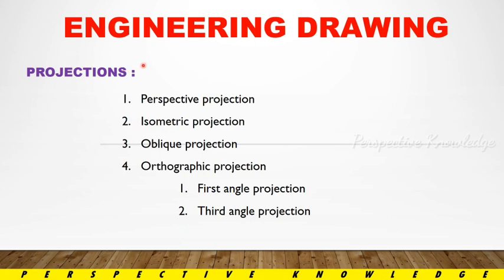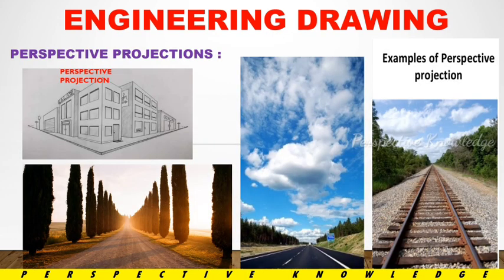Projection — there are types of projections: Perspective Projection, Isometric Projection, Oblique Projection, and Orthographic Projection. Orthographic Projection is further classified into First Angle Projection and Third Angle Projection. Projection is a type of view — it is like looking at a scene with the eye.